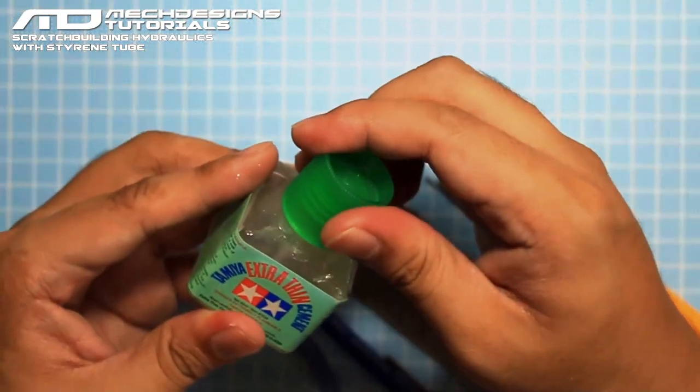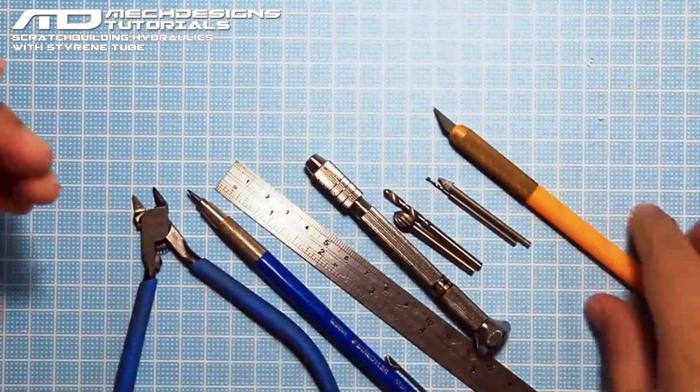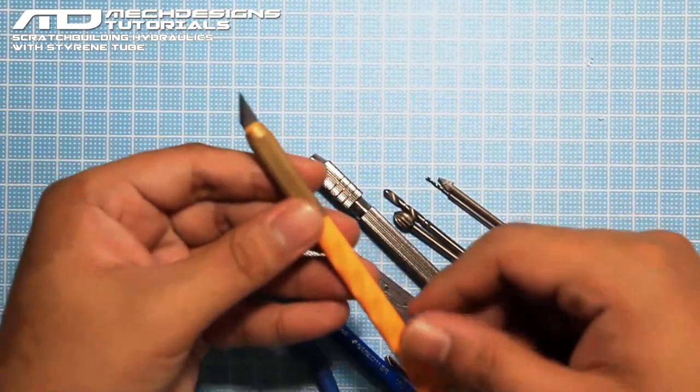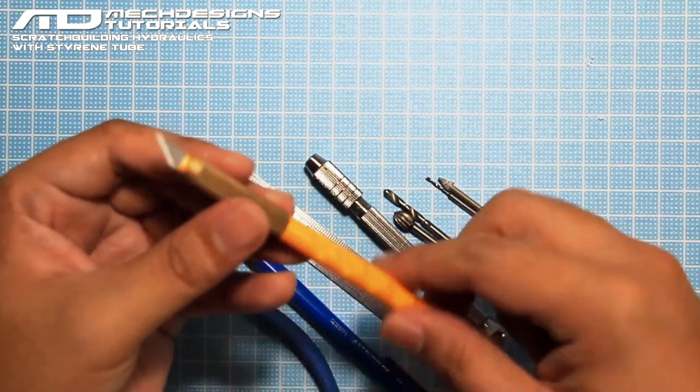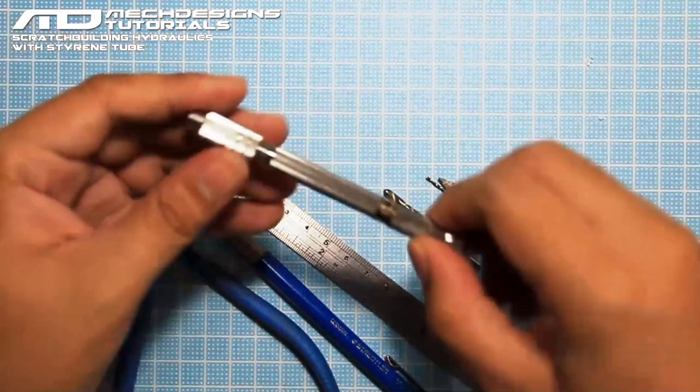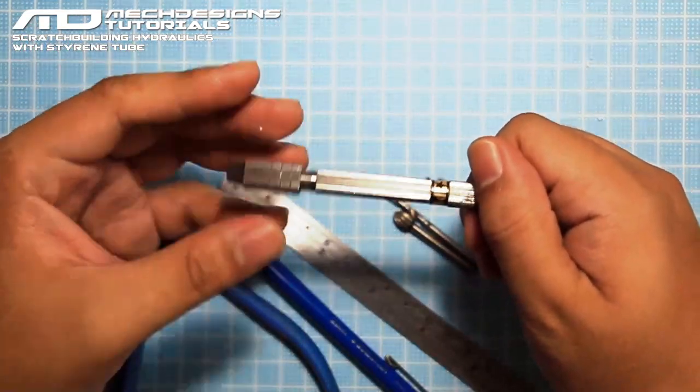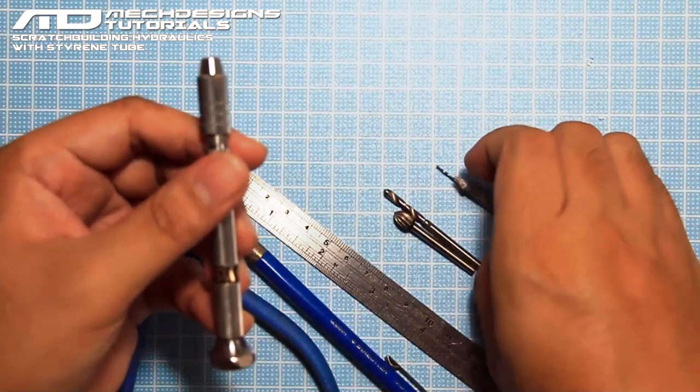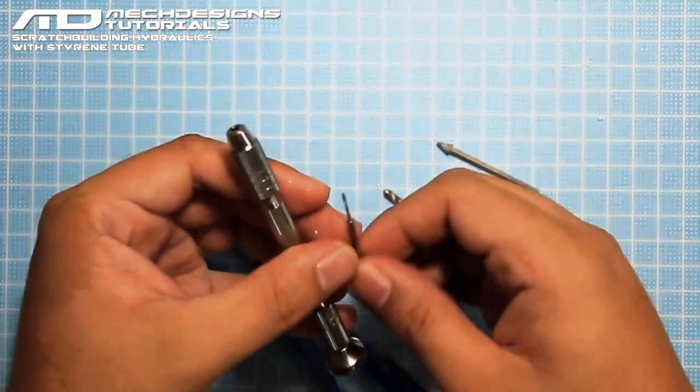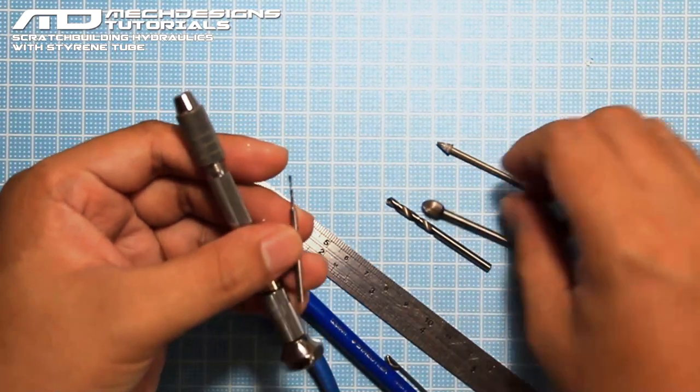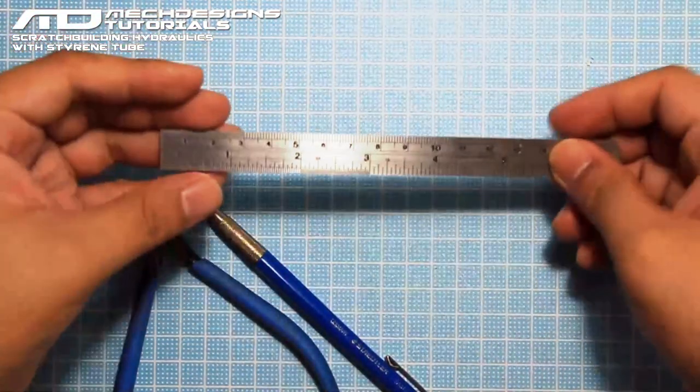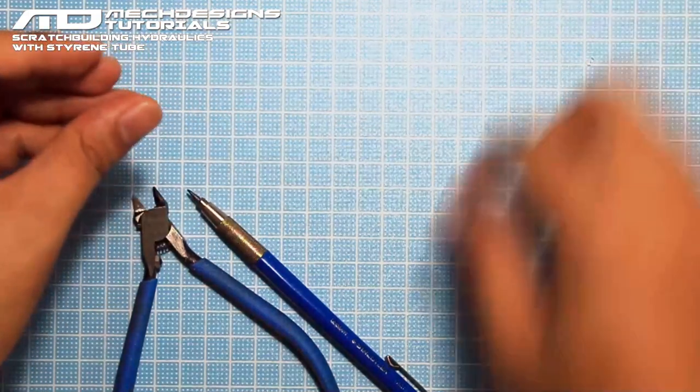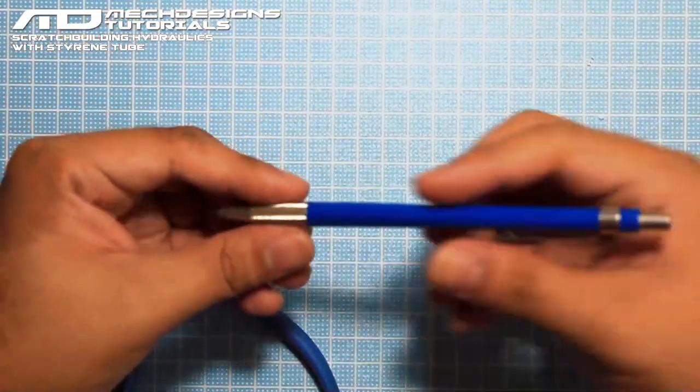We have a hobby knife here, and we're going to use this to clean out some edges. I have a pin vise, and we're going to use this to make some holes. And I'll explain later why I have a lot of drill bits here.